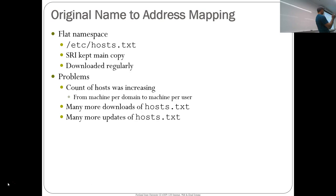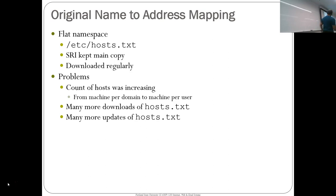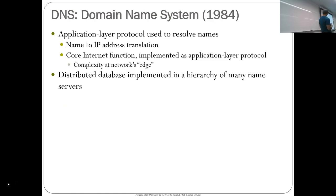Initially it used to be a single flat file — /etc/hosts.txt. SRI kept the main copy and every morning you'd come in and download the new copy to see all the new internet hosts available. This didn't scale obviously, and this was in the early 80s. The count of hosts was increasing, the number of domains per machine was increasing, leading to many more updates to hosts.txt — unscalable.